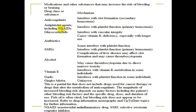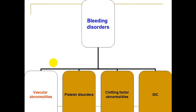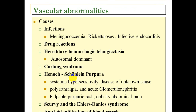These are a list of drugs that can cause bleeding disorders. The most important groups are anticoagulants, anti-platelets, NSAIDs, steroids, antibiotics, antidepressants, alcohol, vitamin E, and even garlic. Bleeding disorders include vascular abnormalities, platelet disorders, clotting abnormalities, or DIC.